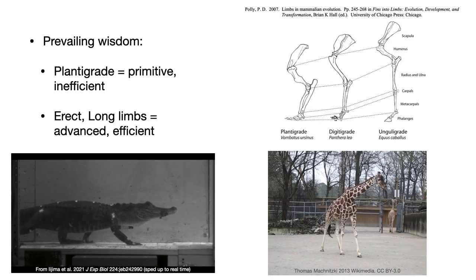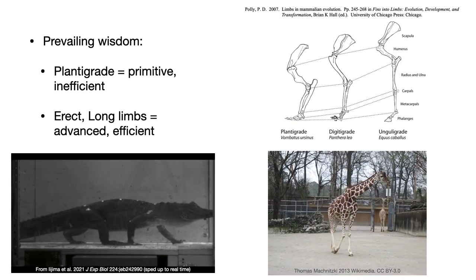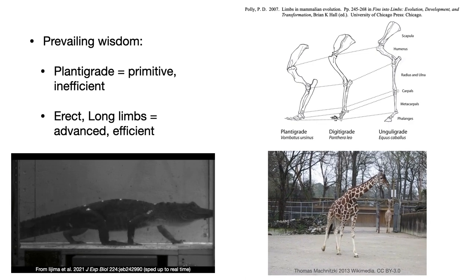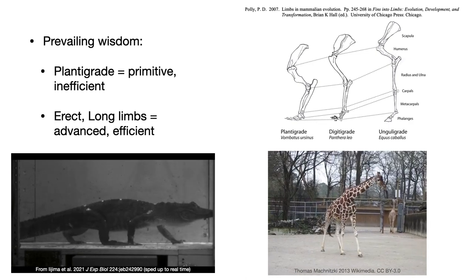For this reason, the prevailing perspective is that plantigrade, as seen not only in early mammals but in many modern reptiles, is a primitive and inefficient posture, whereas having erect and long limbs as seen in many modern mammals is an efficient posture.